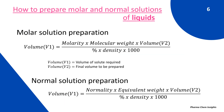Now, how to prepare molar and normal solutions of liquids. For molar solution preparation, the formula is: V1 = molarity × molecular weight × V2 ÷ (percentage × density × 1000). V1 is the volume of solute required; V2 is the final volume to be prepared. Since acids cannot be weighed, they must be measured in ml. For normal solution preparation: V1 = normality × equivalent weight × V2 ÷ (percentage × density × 1000).